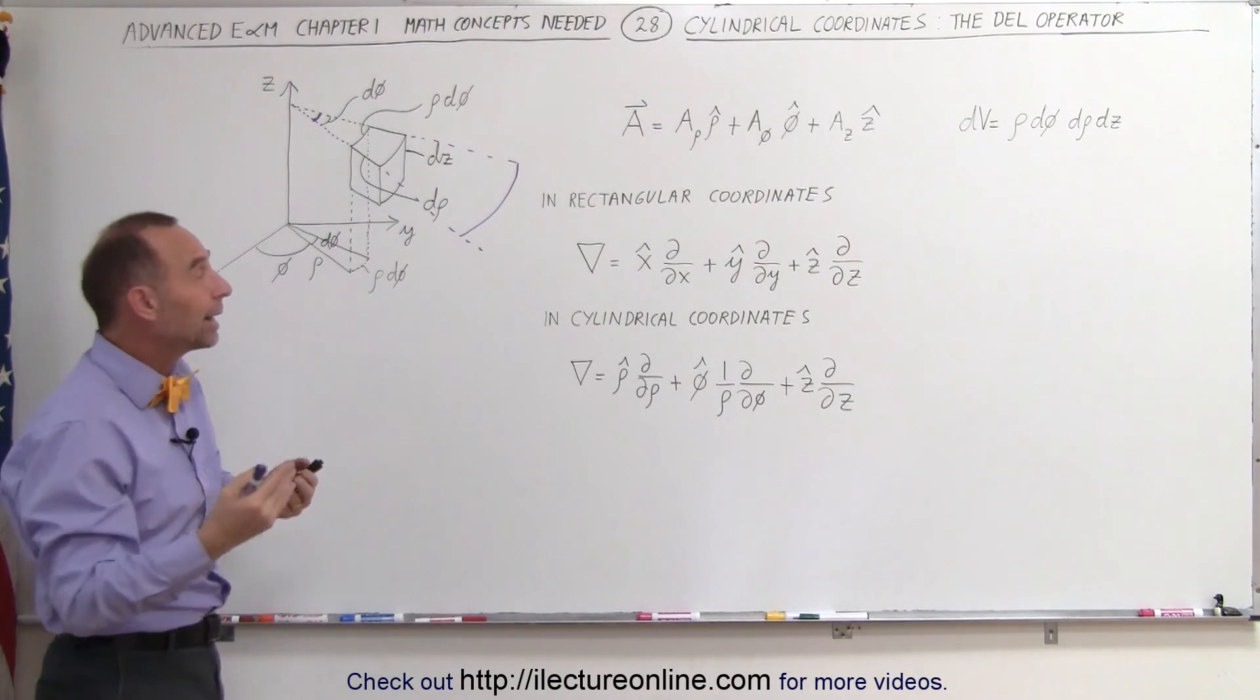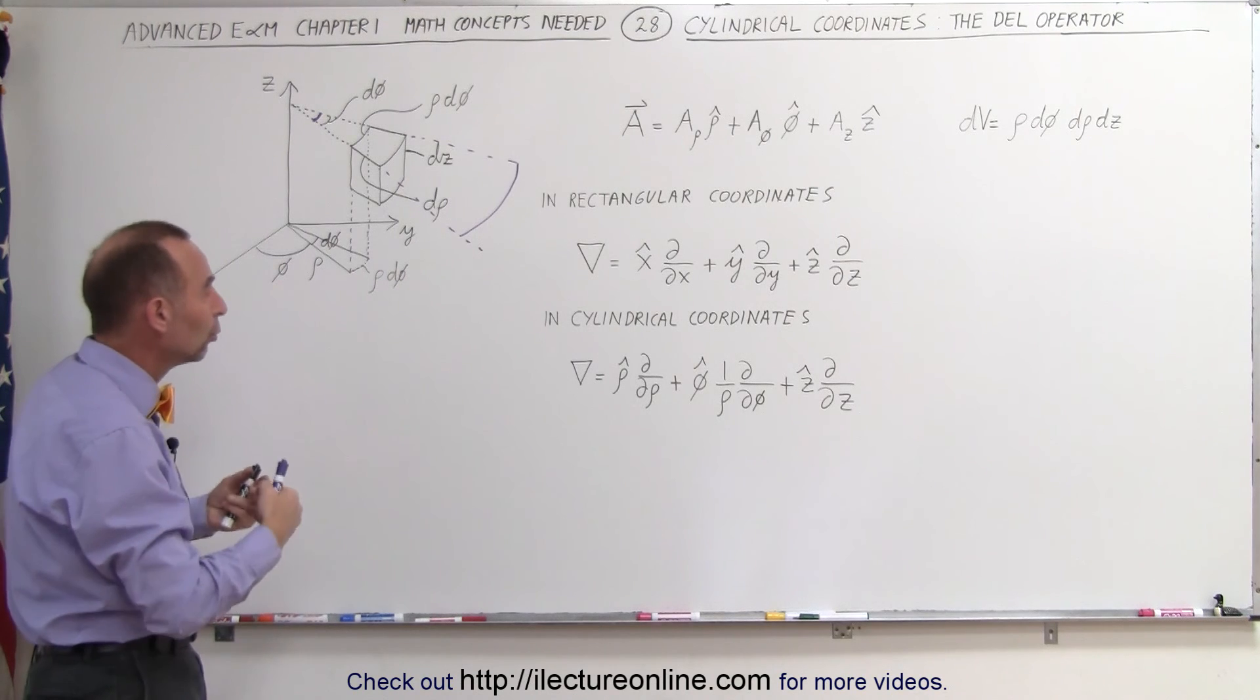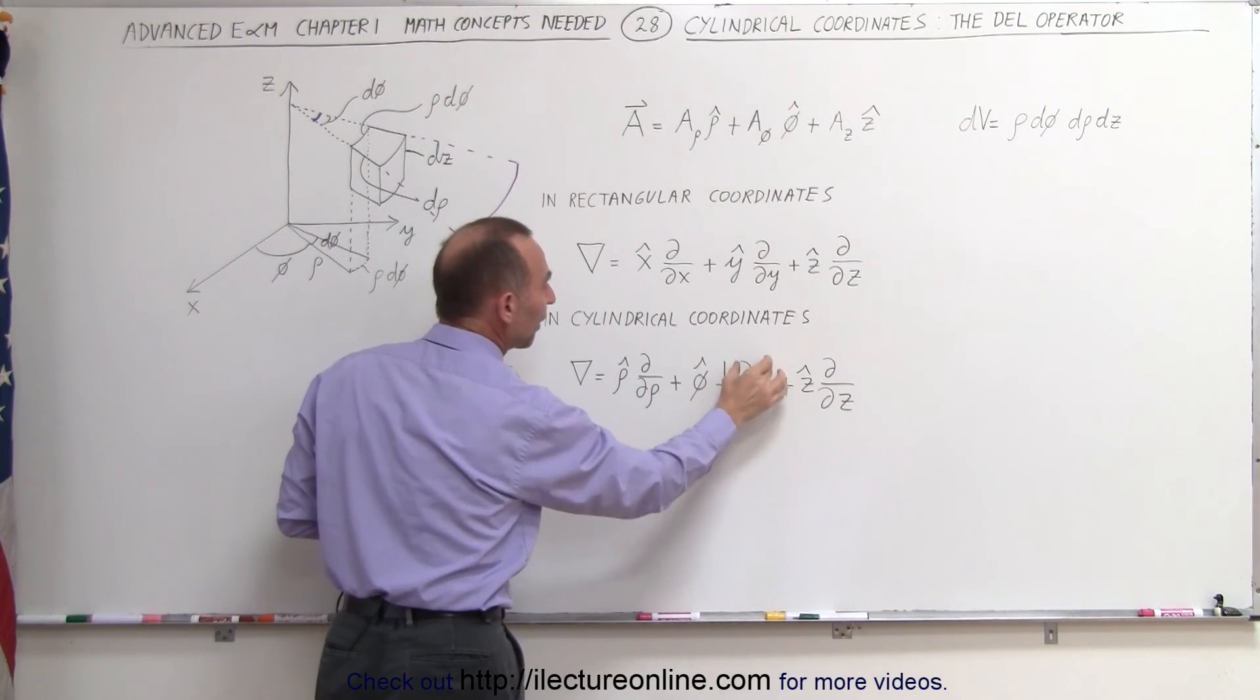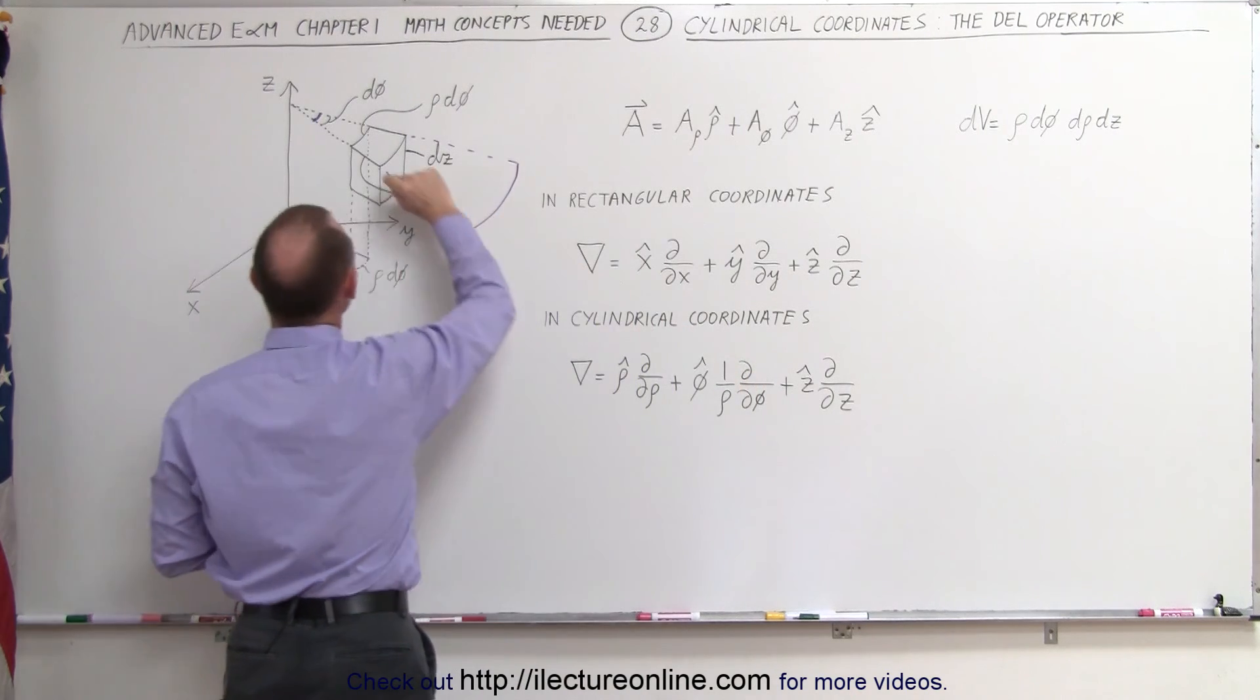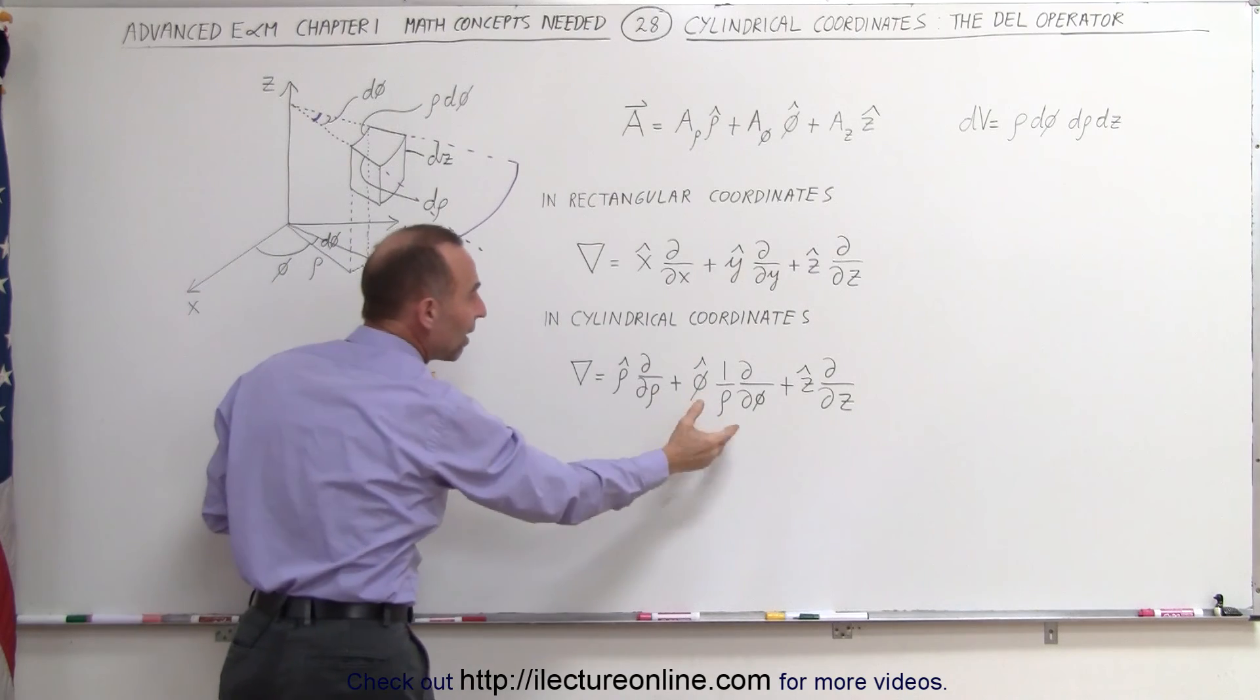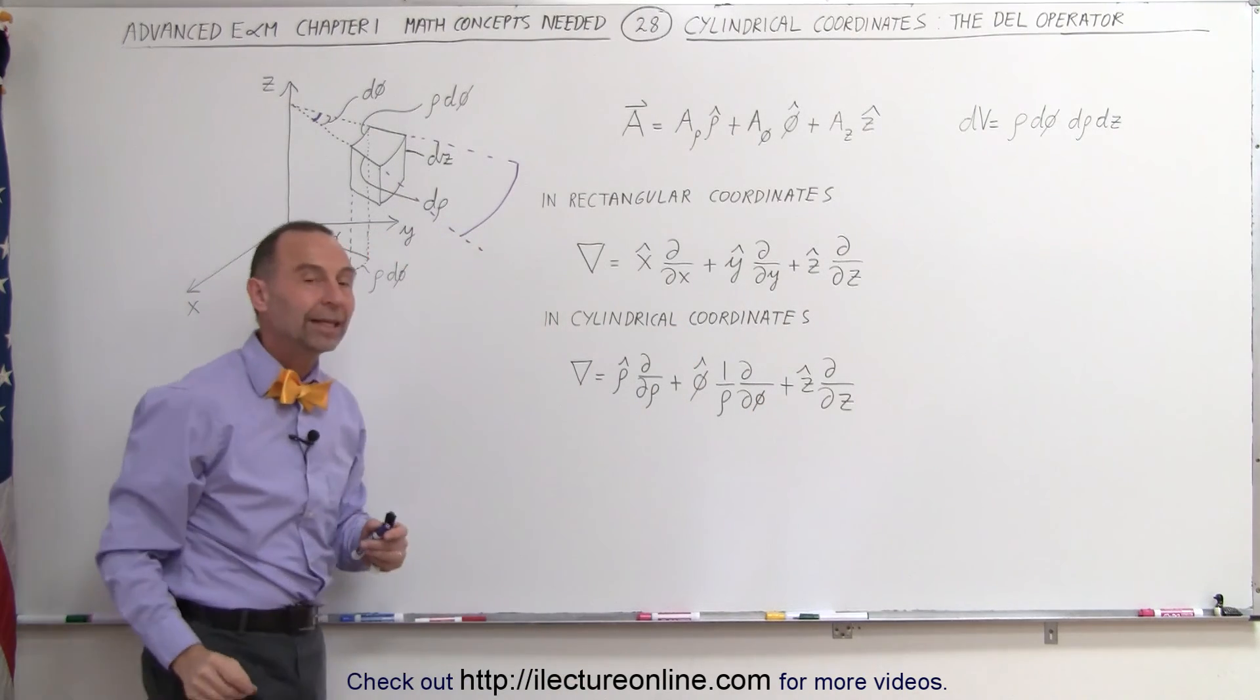And the only way to do that is to divide that by rho. So if you do that then, 1 over rho times the change of the vector with respect to phi, then you've eliminated the dependency of where it is relative to the z axis. And then you have the proper form for the del operator.